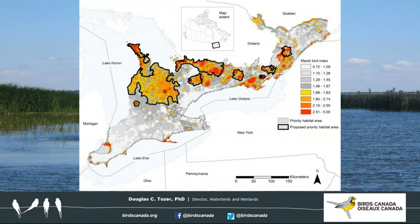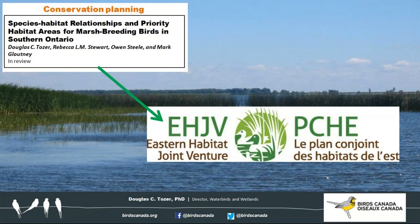Yellow, orange, and red on the map indicate areas with the highest probability of supporting the largest number of non-waterfowl marsh breeding bird species — the best places for future wetland conservation work. Also shown are existing waterfowl-based priority habitat areas with right-hand diagonal hatching, and our proposed marsh breeding bird priority habitat areas with left-hand diagonal hatching outside the existing priority areas. It's our vision that the Ontario Eastern Habitat Joint Venture will expand its wetland conservation work into our proposed marsh breeding bird priority areas, which combined with existing waterfowl priority areas will be an excellent step towards all-bird conservation in the region.